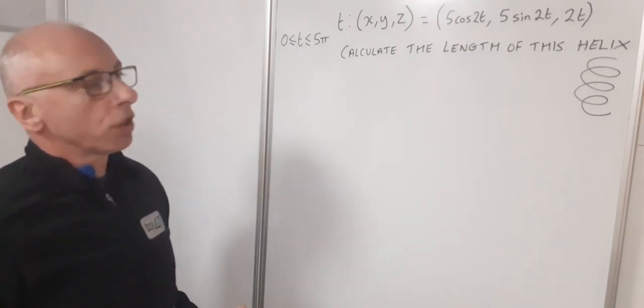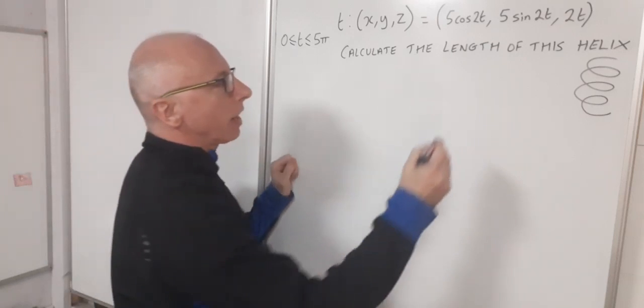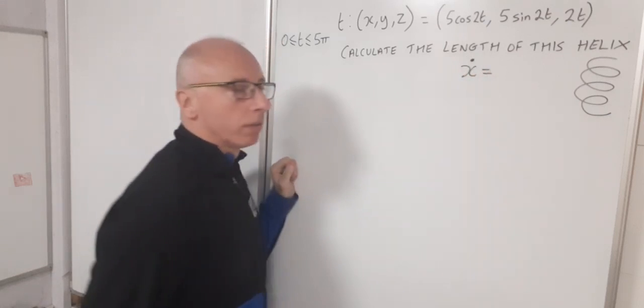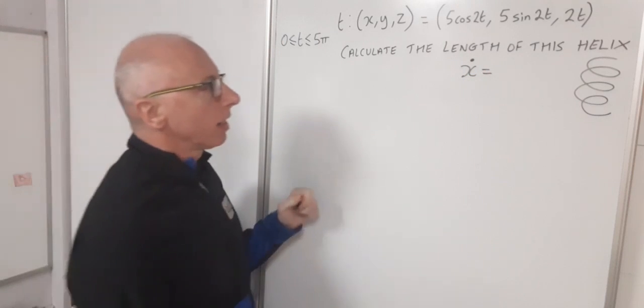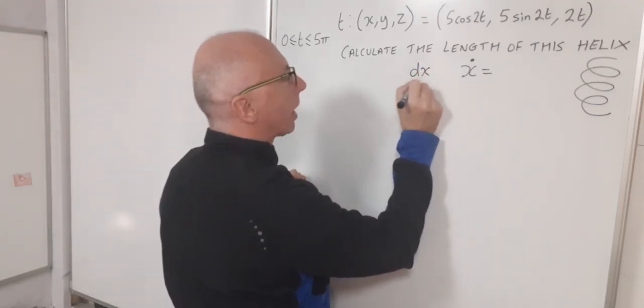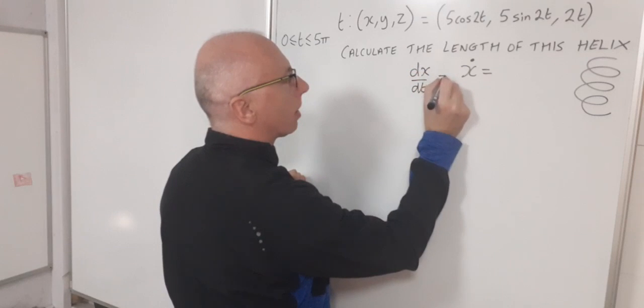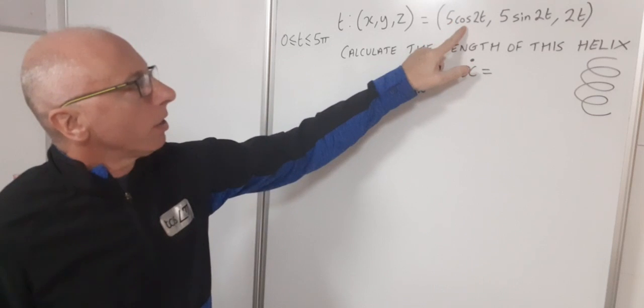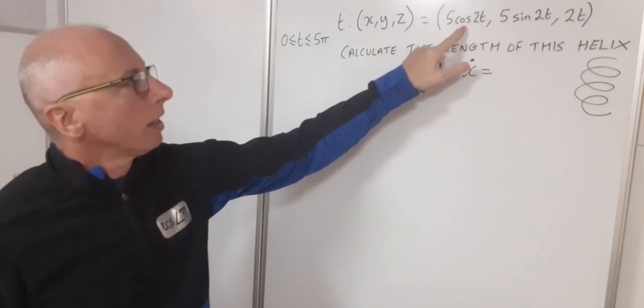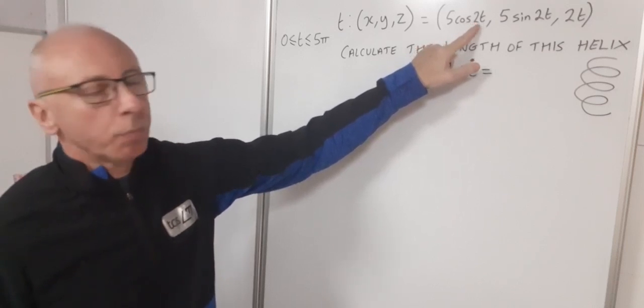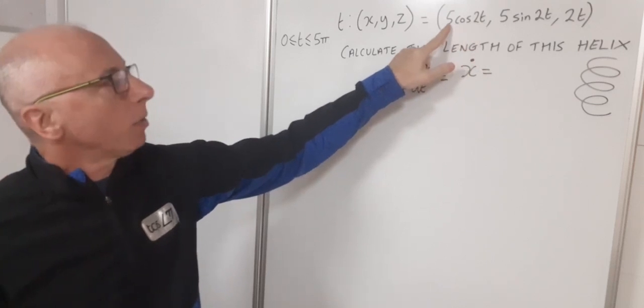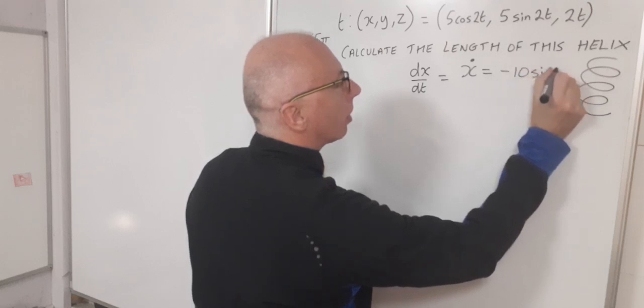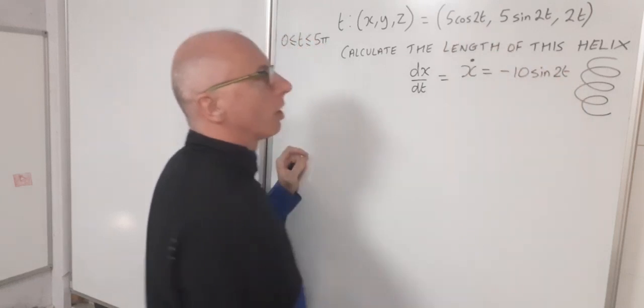Now we see that X, Y, and Z are functions of T. So we can write those derivatives as X dot, which just means dx/dt. Normal rules to take the derivative of this. So the derivative of cosine is negative sine. And with the chain rule, we need to multiply by this two. So then we've got -10sin(2t). So the input doesn't change.